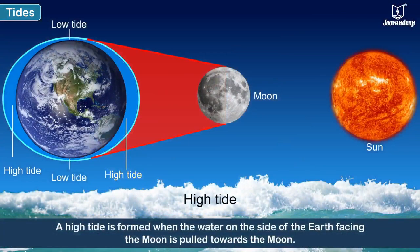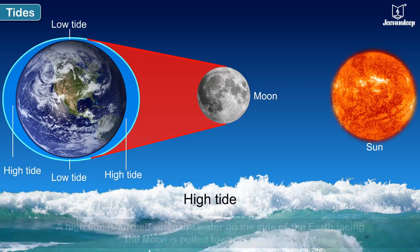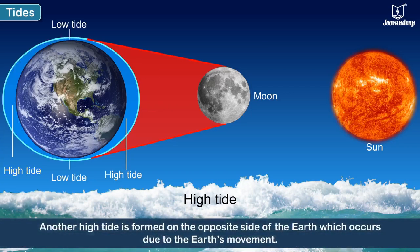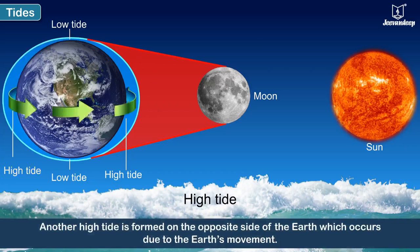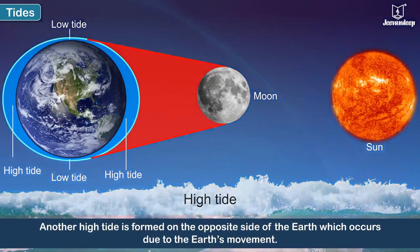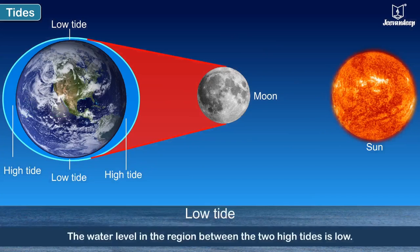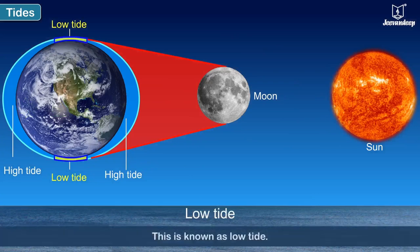A high tide is formed when the water on the side of the Earth facing the Moon is pulled towards the Moon. Another high tide is formed on the opposite side of the Earth, which occurs due to the Earth's movement. The water level in the region between the two high tides is low — this is known as low tide.